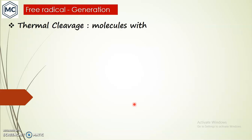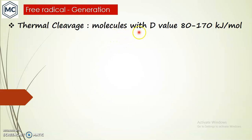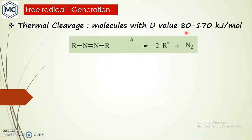How does a free radical get generated? There are many methods. One important method is thermal cleavage. A molecule with a C–H bond dissociation energy value in the range of 80 to 170 kcal per mole usually dissociates by heating, that is thermal cleavage. For example, an azo compound on heating — thermolysis — can undergo homolytic cleavage and form free radicals.